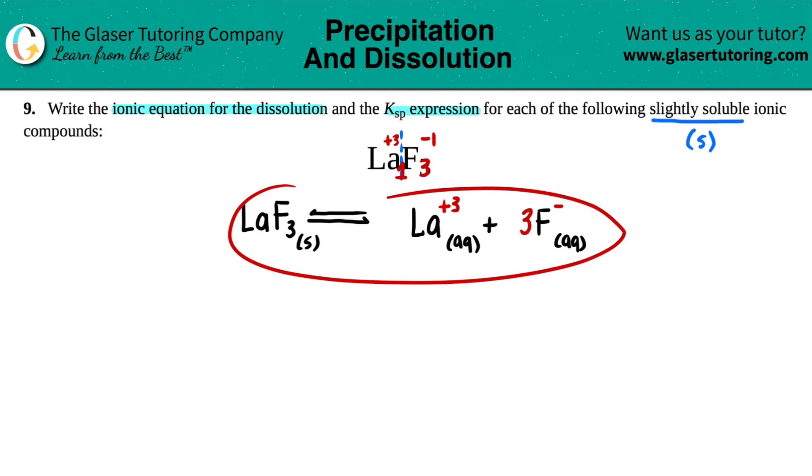From here, we're going to find the KSP expression. KSP expression is just very simple. It's just the concentration of the products because the reactants are always going to be solids. Remember, no solids or liquids allowed in a K expression. So I just focus on the two products.